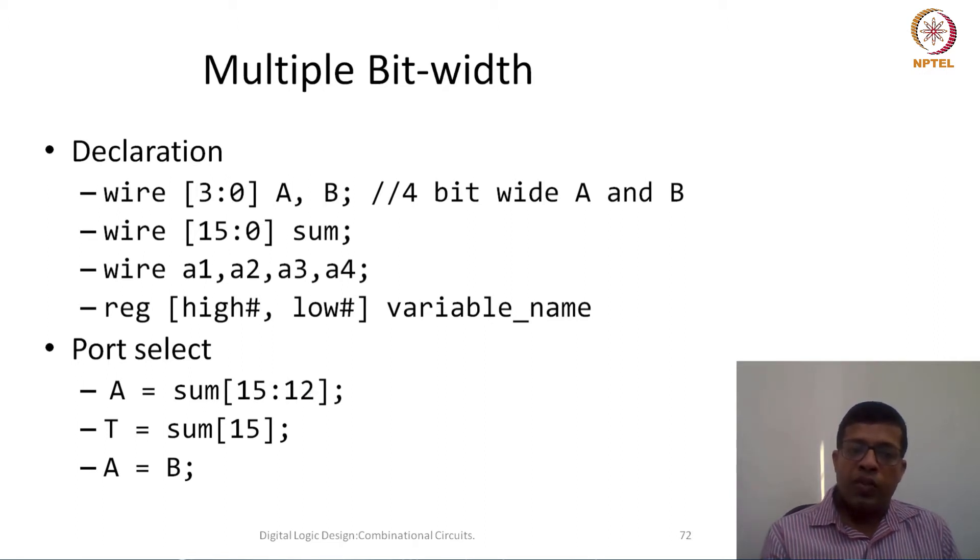I can say A equal to sum 15 colon 12. Now remember, if I want to assign 0th bit of A to 15th bit of sum and first bit of A to 14th bit, then I can reverse it. I can write sum square bracket 12 colon 15, so 12 will become most significant and 15 will become least significant, and that would be assigned one to one to the left hand side variable.